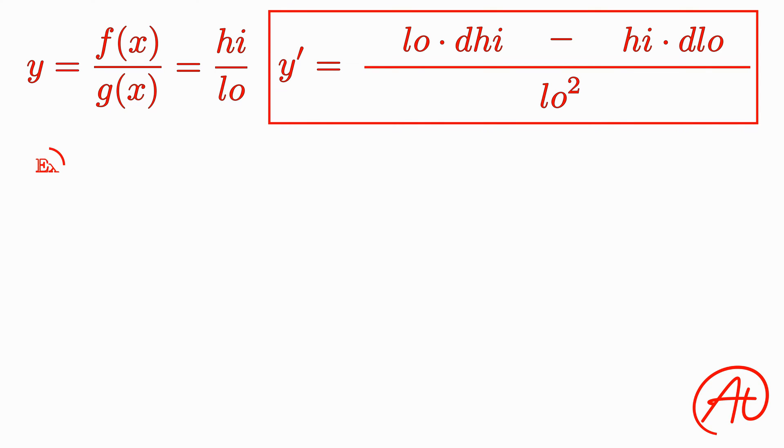Okay, now let's do some examples. Let's use one of the equations we saw before. Say we have y equals 2x squared plus 3x divided by 5x plus 2. In this case, our high is 2x squared plus 3x, and our low is 5x plus 2.